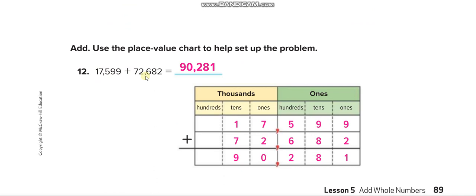Again, two numbers. They wrote them in a line, the ones under the ones, tens under the tens. Similarly, each place value under each other, and then they added them. Here is the answer: 90,281.